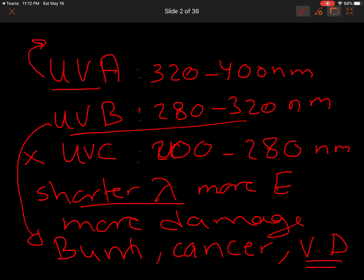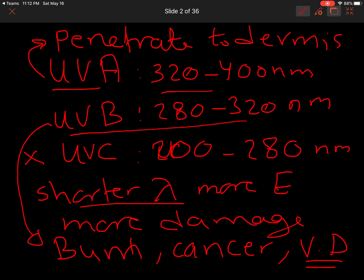UVA is associated with wrinkles because it can penetrate deep into the dermis. When wavelength is long, energy is lower but penetration is higher. UVA penetrates through the dermis and reaches the collagen, causing cross-linking of collagen which leads to wrinkles and makes collagen easily cracked. UVA is also responsible for cancer — particularly melanoma — as many studies show it plays a significant role.